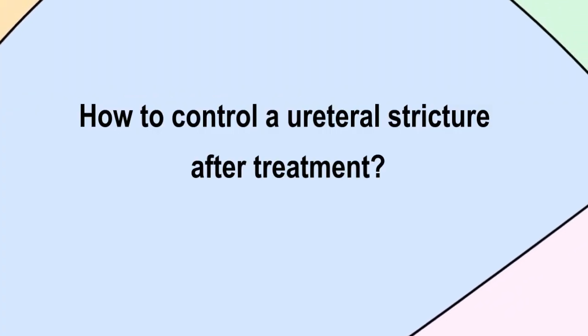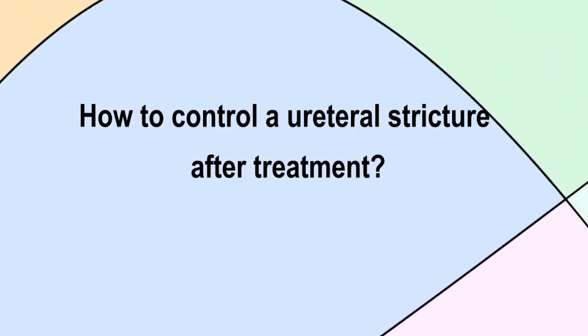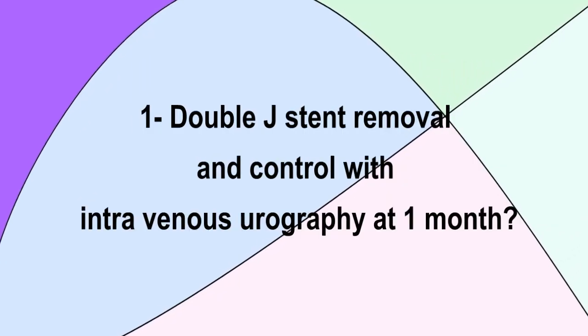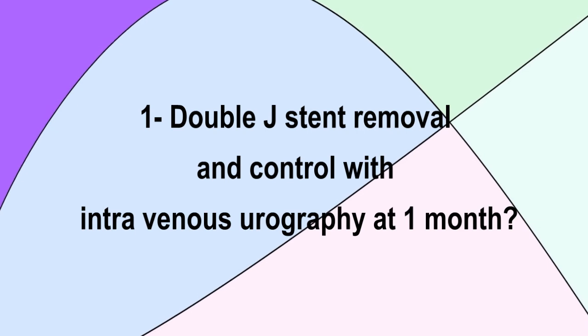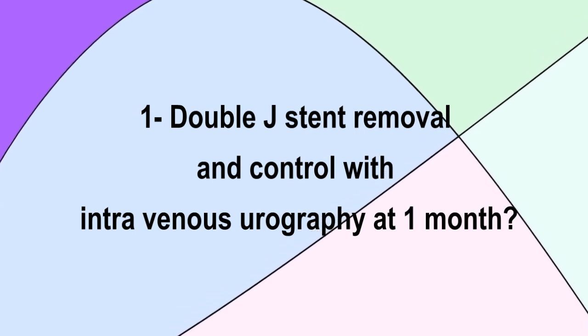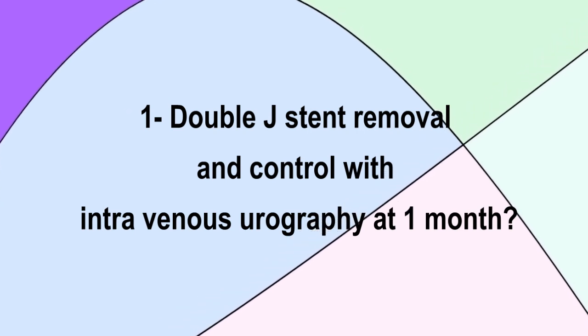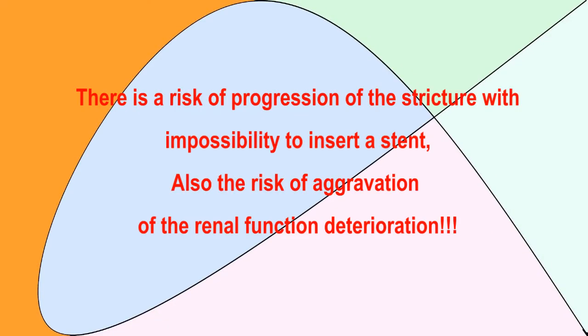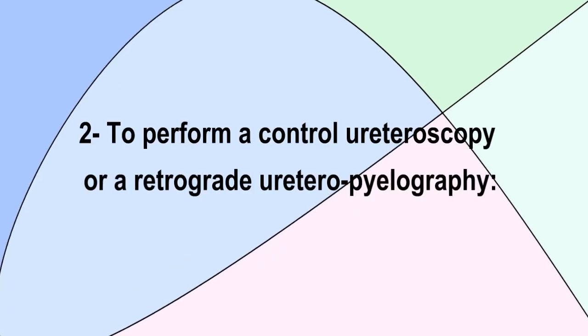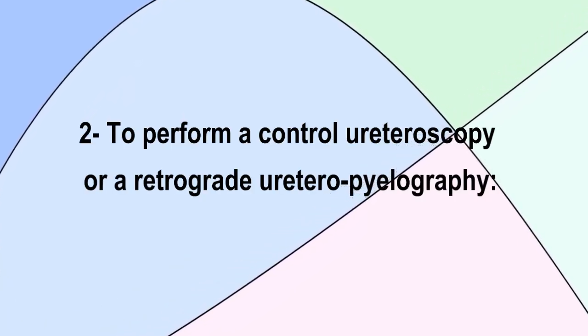How to control a ureteral stenosis after treatment: to remove the JJ stent and perform intravenous urography at one month carries a risk of progression of the stenosis, and also a risk of aggravation of renal function deterioration. It is more logical to perform a control ureteroscopy or retrograde ureteropyelography.